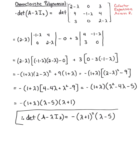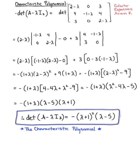So we can officially conclude that the characteristic polynomial is equal to -(lambda+1)^2 multiplied by (lambda-5). This is our characteristic polynomial for the given matrix A.